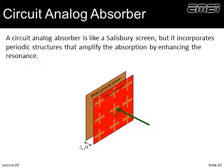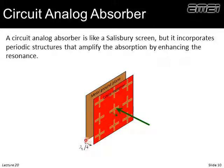If we wanted to enhance the lossy material, we might also put resonant metallic elements in it. That enhances the resonance and the absorption. We're still a quarter wavelength away from the metal ground plane, and this does the same thing as the previous slide but with an enhanced response. This would be called a circuit analog absorber.